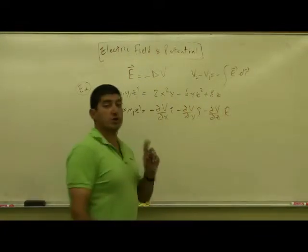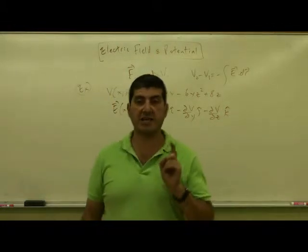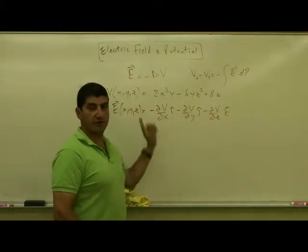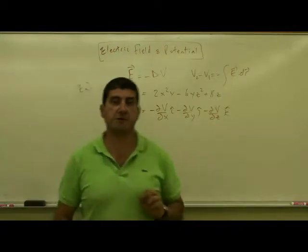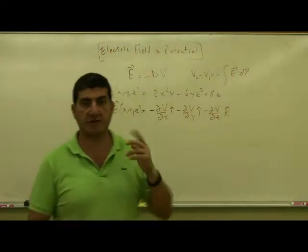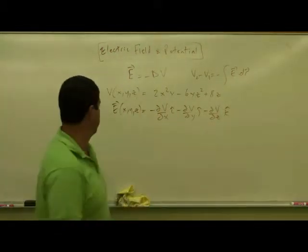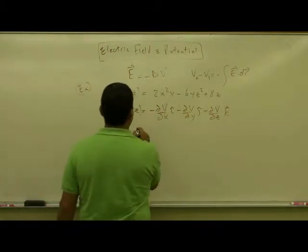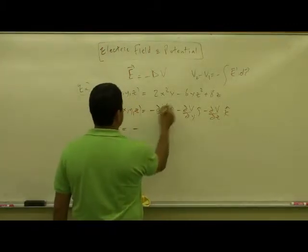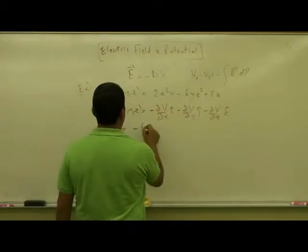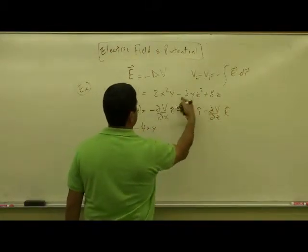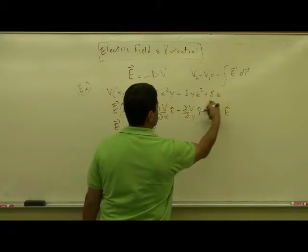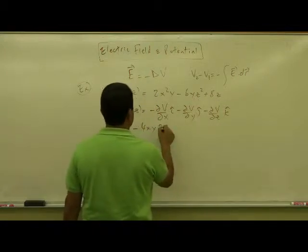You have to make sure when doing this not to forget the negative — you have to take the negative of the derivative. A lot of people forget that. So the derivative with respect to x is going to give negative of 4xy, and the derivatives of the other terms with respect to x are zero.